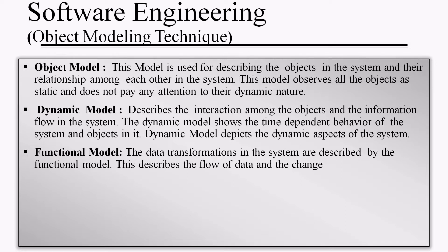The dynamic model describes the interaction among the objects and information flow in the system. The dynamic model shows the time-dependent behavior of the system and objects in it, depicting the dynamic aspects of the system. The functional model describes the data transformations in the system and the flow of data and change.